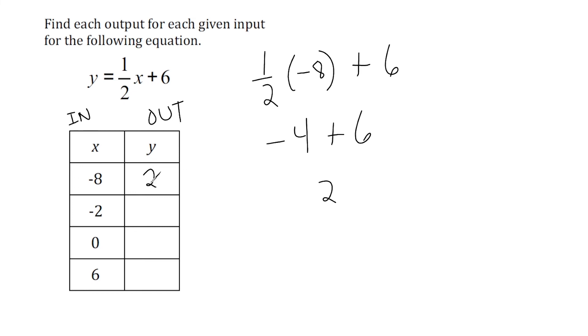All right, now we're going to cut the next input in half. So let's take negative 2 and cut that in half. Half of negative 2 is negative 1, and then we're going to add the 6. And that's going to give us positive 5.